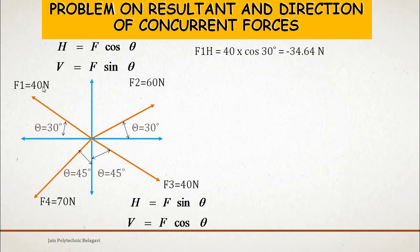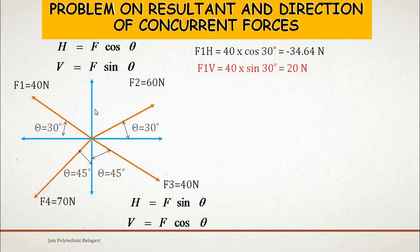The horizontal component of F1 is H = F cos θ = 40 cos 30° = −34.64 N. It is negative because this horizontal component acts in the left direction. The vertical component of F1 is F sin θ = 40 sin 30° = 20 N, positive because it acts upward. Convention: rightward and upward components are positive; leftward and downward components are negative.